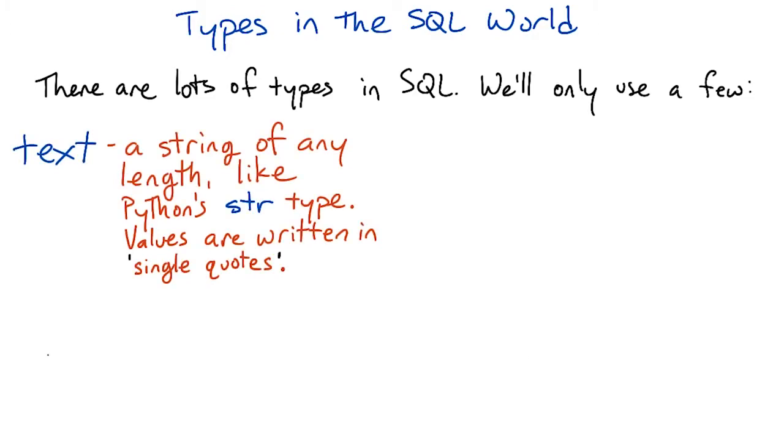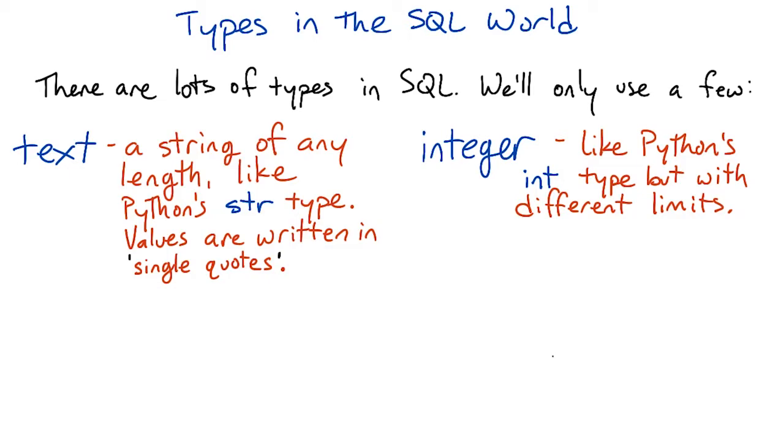SQL has several different string types. In this course, we'll just use the text type, which is basically the same as a Python string. Same goes for numbers. SQL has number types for many different purposes, but in this course we'll mainly be using the integer type, which is roughly the same as Python's int.